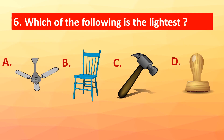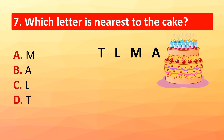Question 6: Which of the following is the lightest? Option A: fan, Option B: chair, Option C: hammer, Option D: (from image). Question 7: Which letter is nearest to the cake? The correct answer is option B: the letter A.